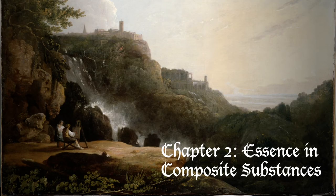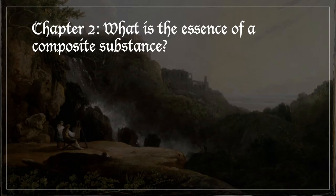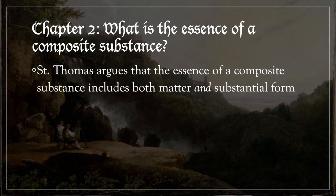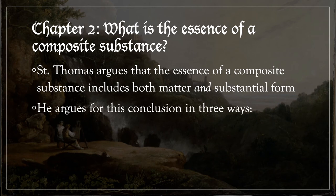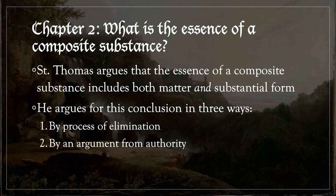Chapter 2 of De Ente et Essentia studies essences as found in composite substances, that is, material substances. In chapter 2, St. Thomas begins by arguing that the essence of a composite substance includes both the matter of that substance and its substantial form. He argues for this conclusion in three ways: first, using process of elimination; second, by giving an argument from authority; and third, by reasoning.